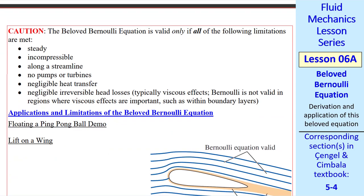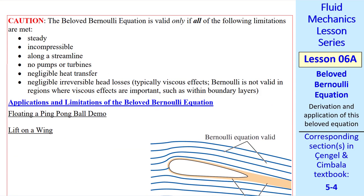I must caution that the Beloved Bernoulli Equation is valid only if all of the following limitations are met: The flow has to be steady, incompressible. We're talking about flow along a streamline. There can't be any pumps or turbines along the streamline.